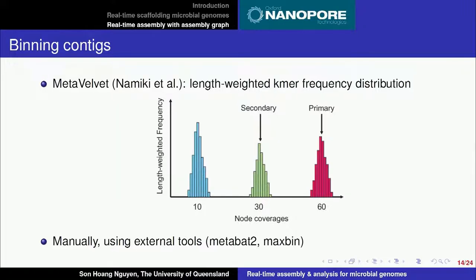Here's the binning algorithm in the preprocessing step. We adapted the idea from Meta-Velvet, fitting length-weighted frequency of the contigs into a mixture model of Poisson distributions, identifying the peaks, and then assigning the bins appropriately. However, this doesn't always work because the peaks can be very close together and difficult to identify. Another option is to provide a binning file assigning contigs to bins by running MetaBAT2 or MaxBin, or even doing manual curation, and then using that binning file as augmented input to NP-graph.